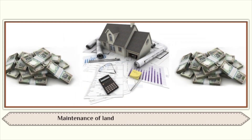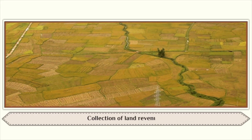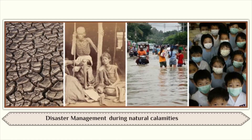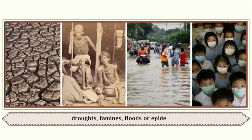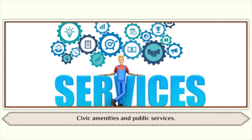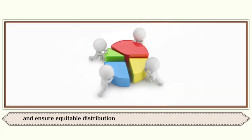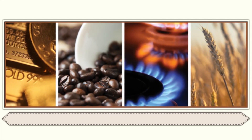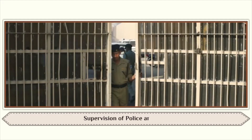The functions of the District Collector include: maintenance of land records and land acquisition; collection of land revenues; disaster management during natural calamities such as droughts, famines, floods, or epidemics; provision of civic amenities and public services; control of black marketing and ensuring equitable distribution of essential and controlled commodities; supervision of Panchayati Raj; and supervision of police and jails.